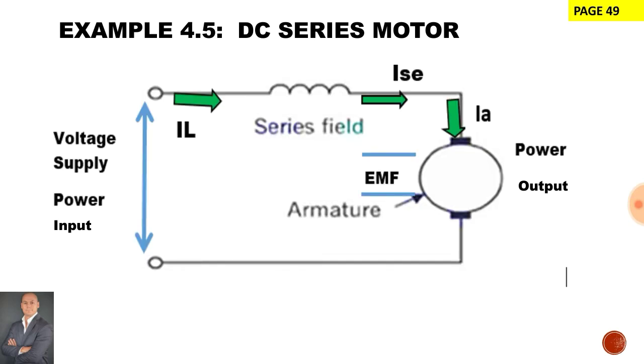Now for a motor the current is drawn from the supply and the armature is drawing armature current. Because it's a series circuit it means that current remains the same throughout the circuit.